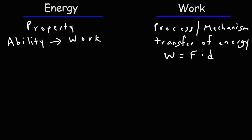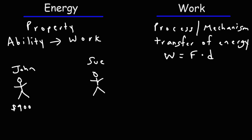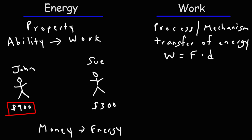Let's think of an analogy that will really help you see the difference between work and energy. Say we have an individual — we'll call him John — and another person, Sue. John has $900 in his bank account and Sue has $300 in hers. The money in these bank accounts represents energy in this example. Both represent a form of value. Now let's say John goes to his bank, makes a withdrawal, and gives that money to Sue.